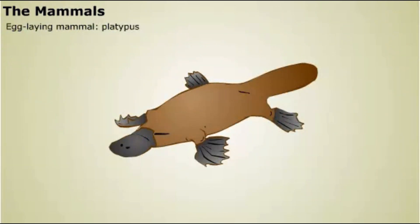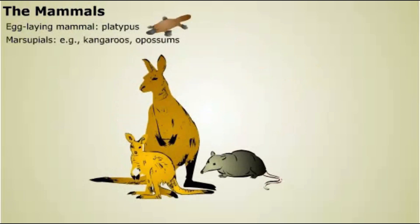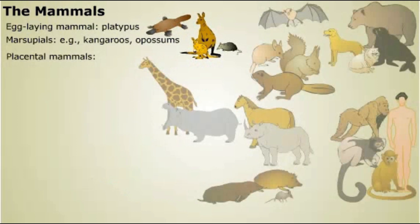A few modern mammals still lay eggs — the platypus is an example. Marsupials give birth to live young at an early stage of development; the newborn crawls into a protective pouch on its mother's body to complete its development. Examples of this group are kangaroos and opossums. All other mammals, and most mammal species living today, are placental mammals, named for having a placenta — an organ that helps exchange nutrients and wastes between the mother and the developing offspring. Placental mammals give birth to offspring that are more developed than the young of marsupials.